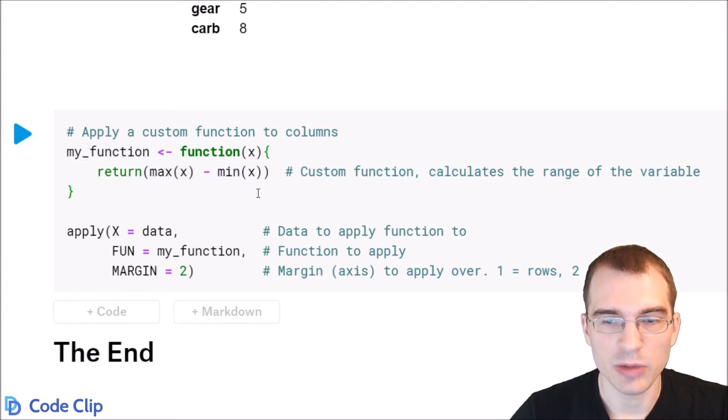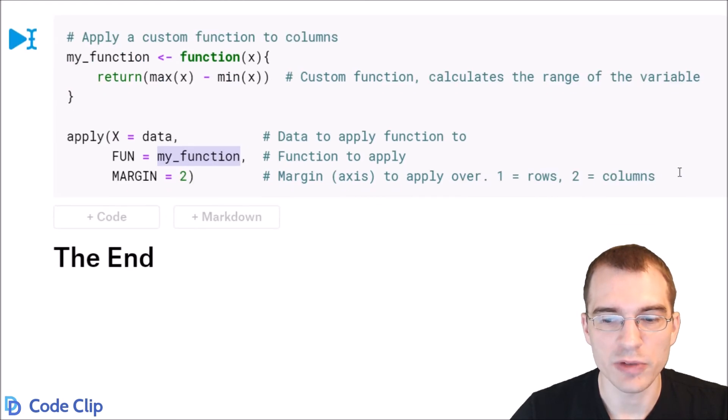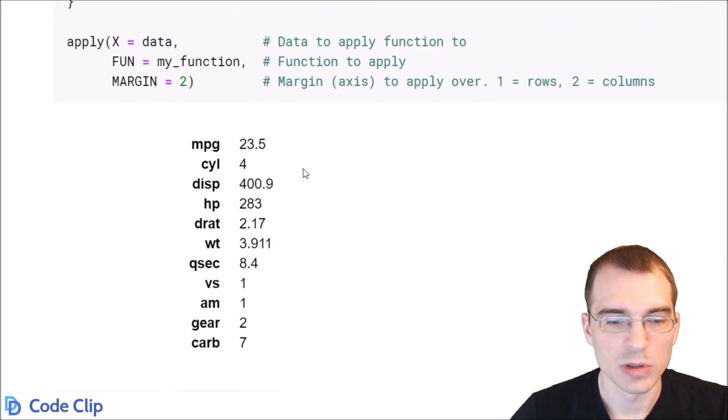And then we can run the same apply but instead of passing in a built-in like max, we're just passing in this my_function that we've written here. When we run this, it'll give us the range of each column. There we are.